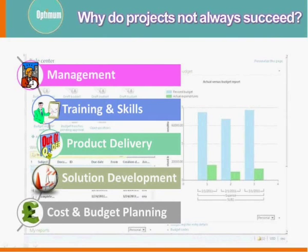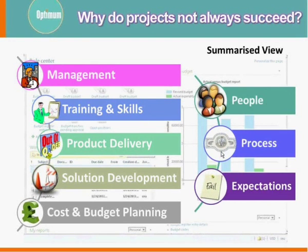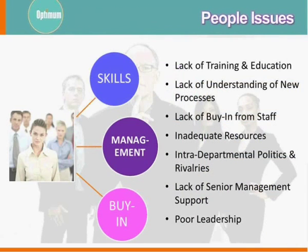If you go on Bing and start doing a search on ERP failures, you'll be able to get lots of information — top tens, top twenties. I've simplified those down to five things, and if you simplify even further, down to three: people issues, process issues — which John will talk about later — and expectations that fail. What I'm going to cover is the people side of things.